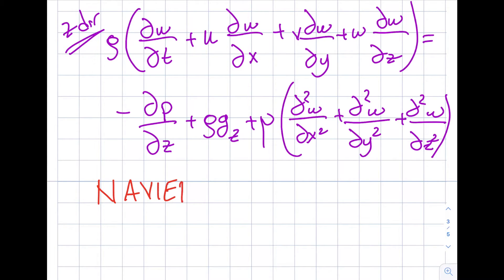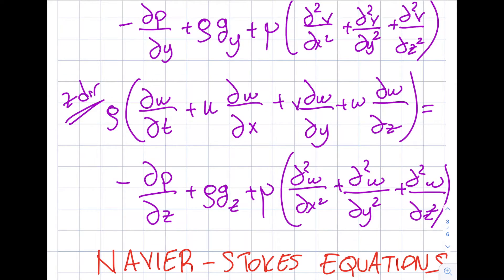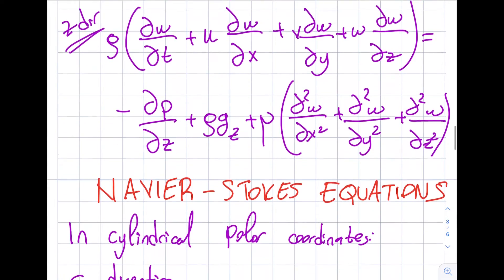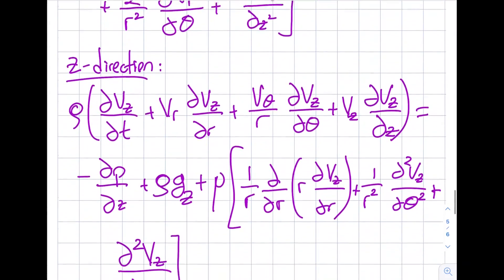These are the Navier-Stokes equations, written here in Cartesian coordinates. The most common geometry you might think of is a pipe — but applying Cartesian coordinates to a pipe makes life much harder. Instead, I need to use cylindrical polar coordinates with r, θ, and z directions. I've written those equations out and I'll go through them now.